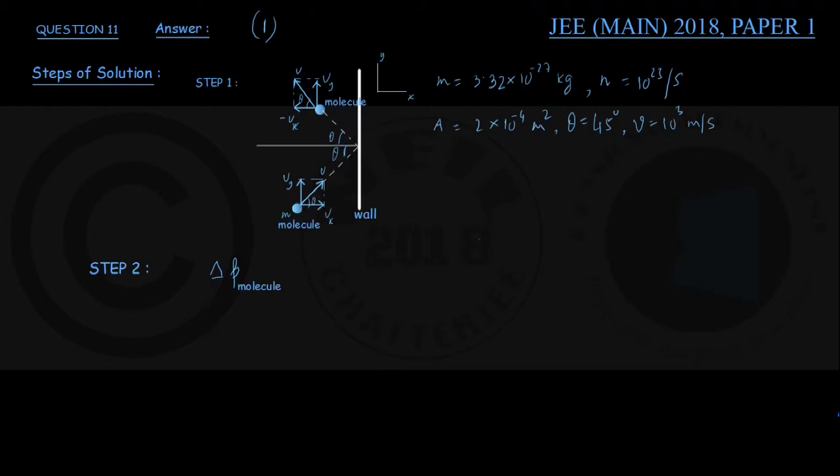Therefore momentum change: the final value of linear momentum is m × (-Vx). As you understand, the y component does not change, only the x component changes. So after the collision, momentum x component is m × (-Vx). Subtract from it the momentum before the collision x component...